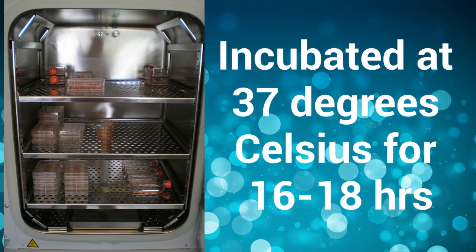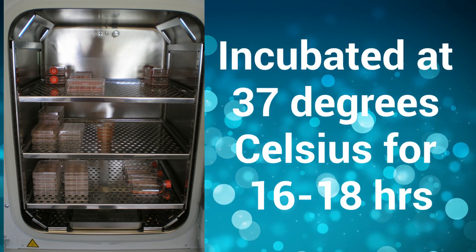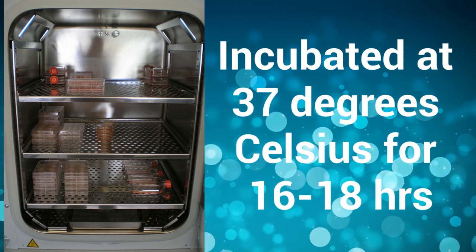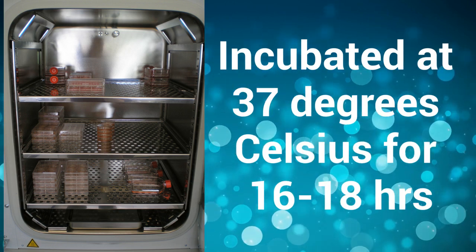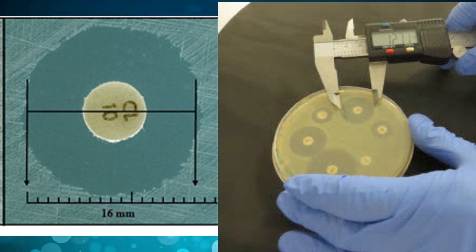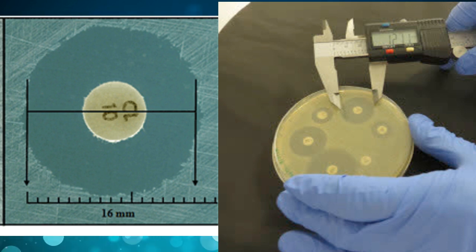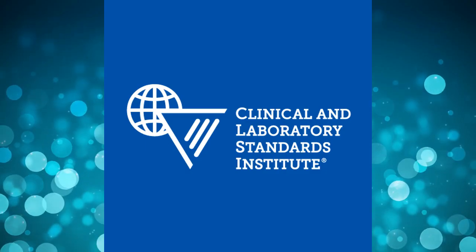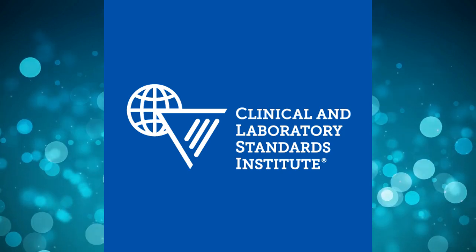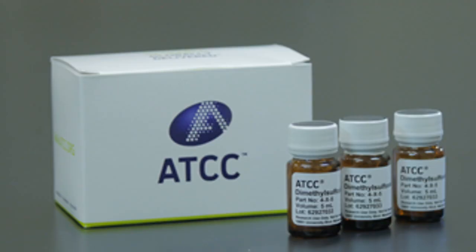But when testing for MRSA, results should be read only after 24 hours of incubation. The zones of complete inhibition of growth around each of the discs are measured using a ruler or vernier calipers. The diameter of the disc is also included in this measurement. The zone of inhibition is reported as sensitive, intermediate, or resistant based on the standard zone size interpretation chart. Control strains should be tested each time when a new batch of discs or Mueller-Hinton Agar is used.